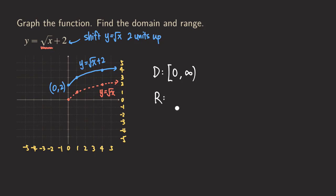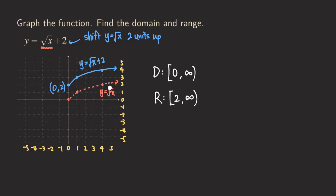And then what about the range? For the range, we look at the y values for this graph. The lowest point this time is two, and it's including the two. So we are going to start at two with the bracket. And then what about the highest point? There was no highest point because the graph will just keep going up, so we are going to get infinity for the range. Comparing with the parent function, the range will be different, but the domain is the same, because for the parent function the lowest point has a y value of zero, so the range will be starting from zero instead of two.